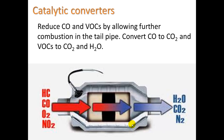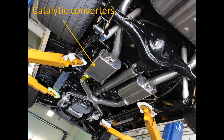Here's another big technology that came out of the Clean Air Act: catalytic converters. All cars have catalytic converters, and these reduce carbon monoxide and VOCs by allowing further combustion in the tailpipe. They convert CO to CO2 and VOCs to CO2 and H2O. VOCs would be like unburned fuel or oil that's gone through the engine and out your tailpipe. CO2 and H2O are the two products of burning any burnable material — wood, fuel, whatever. On a car, it would look kind of like this.